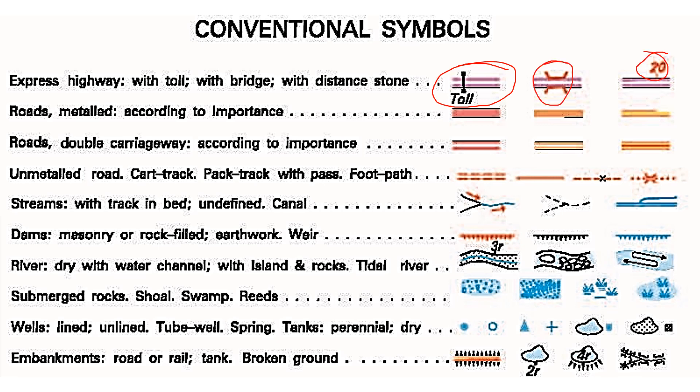If it is a single carriageway, then it is shown with lines in between — these are metal road lines in between. If it is a double carriageway, then they are parallel lines like this. Now, if a place is having a metal road, the occupation should be trading.